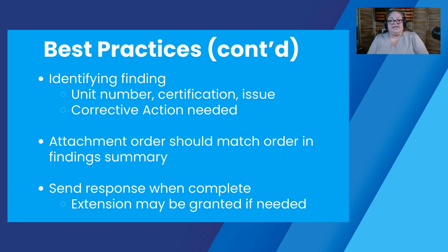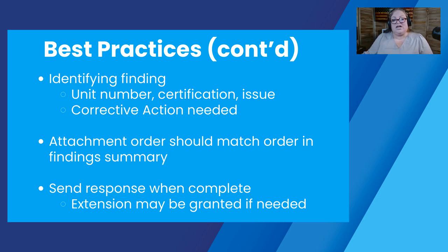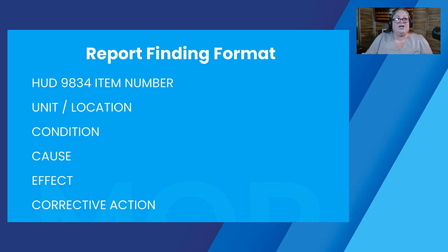When identifying your finding, make sure you provide unit number, certification, and the issue, and reference what corrective action was necessary. It makes it easy for your reviewer to go: here's the certification I needed for this finding for this unit. It's always a good idea to make sure the attachment order — the order of the documents you're including — is in the same order as your finding summary. So if the finding summary is unit 3, unit 5, unit 6, make sure those attachments are in that same order so it's easy to reference the documents to the particular finding. Send those responses when they're complete, rather than sending them a little at a time.